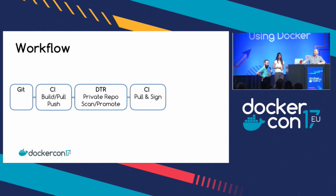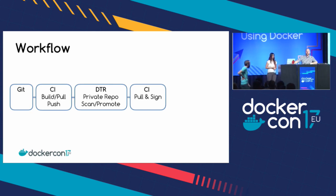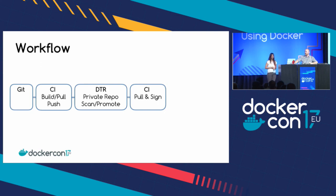Show of hands — who has CI systems and supply chains at work? How many of you hate them? How many of you feel they're secure? How many of you use GPG or some sort of signing method? Let the record show — that's three. That's impressive, but there's not very many.